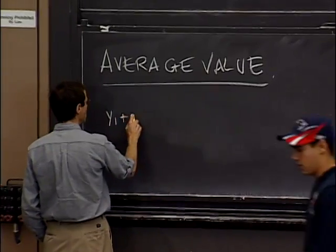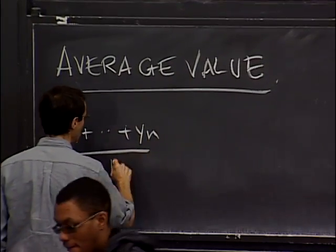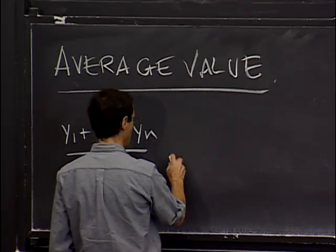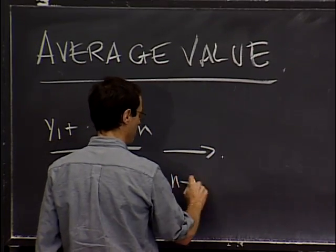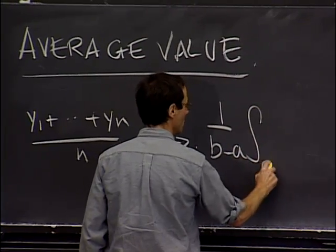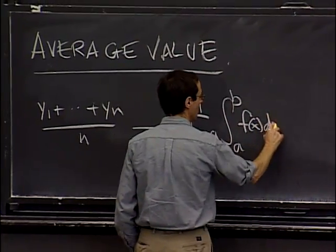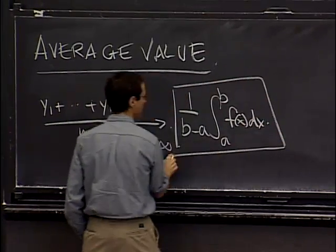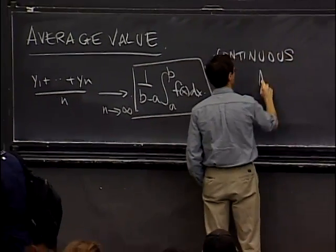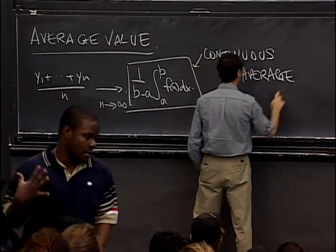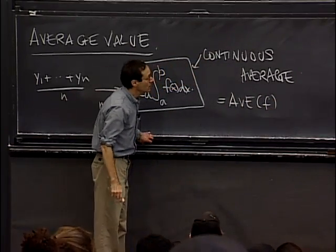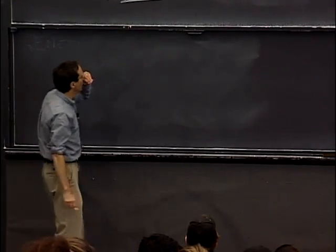If you take the average of a bunch of numbers, that looks like this. And we can view this as sampling a function, as we would with a Riemann sum. And what I said last week was that this tends to this expression here, which is called the continuous average. So this is the continuous average.